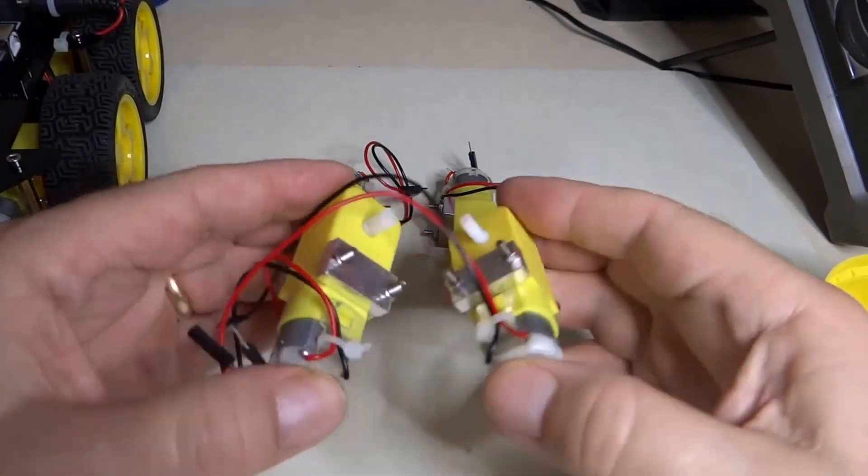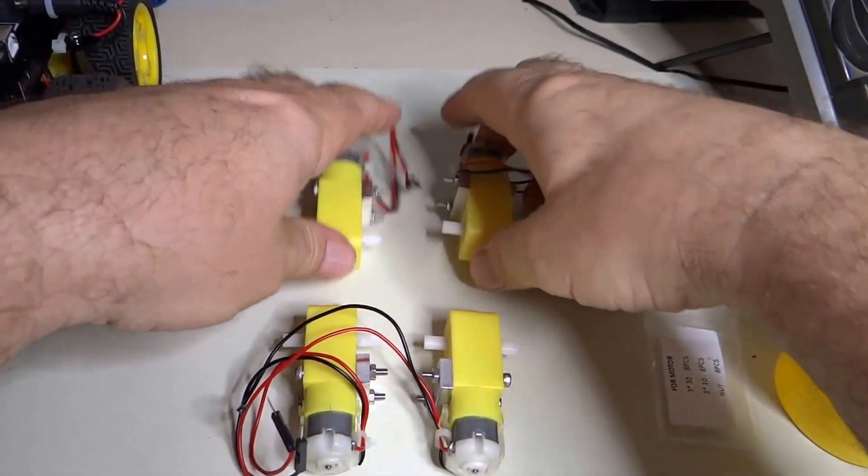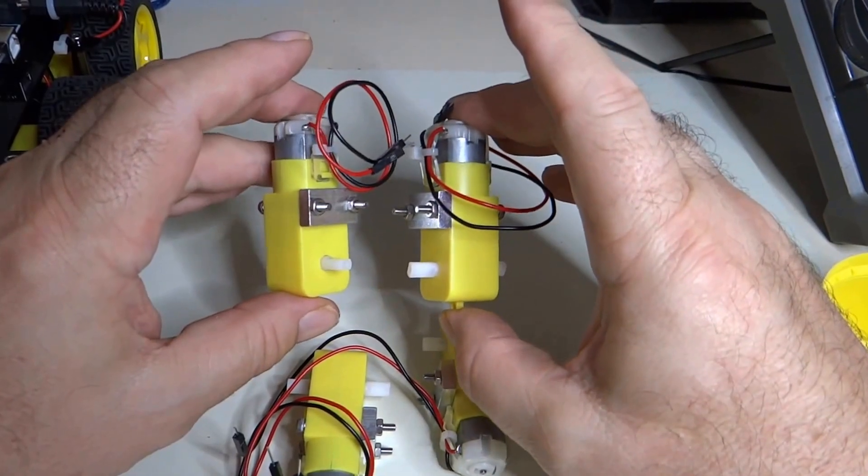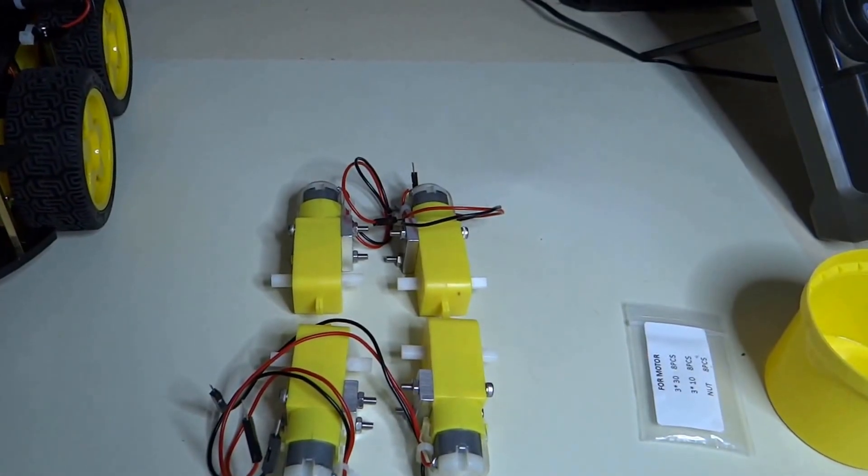Okay, now we've got the brackets mounted to the motors. We know the wires are nice and well strain relieved. The motors, the brackets are on the same side as the wires. We are ready to put them in the chassis.